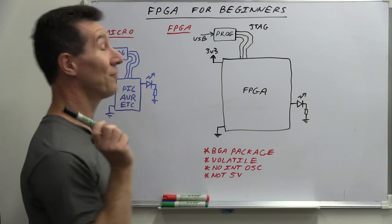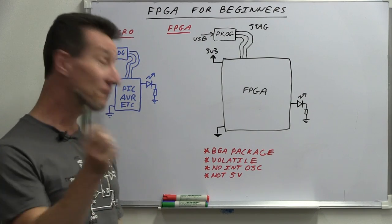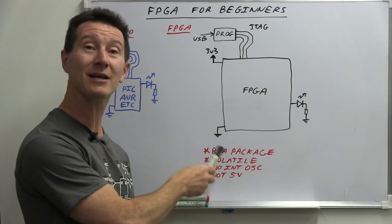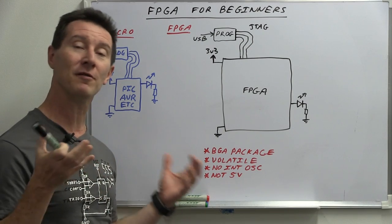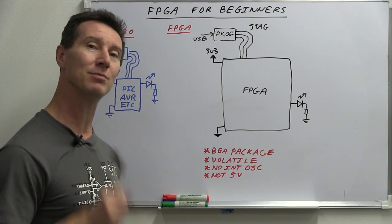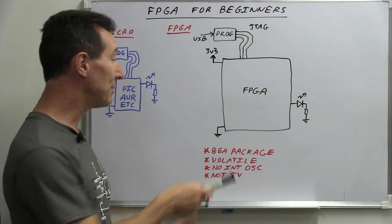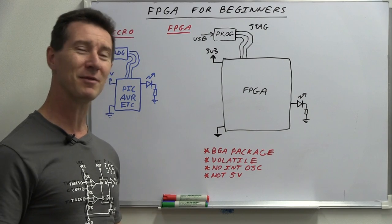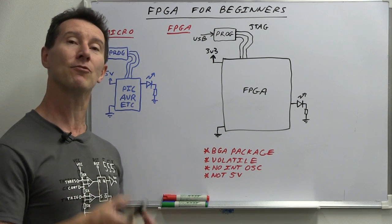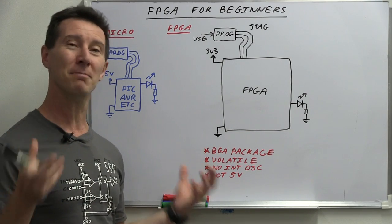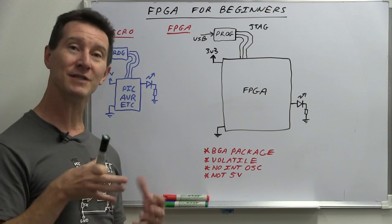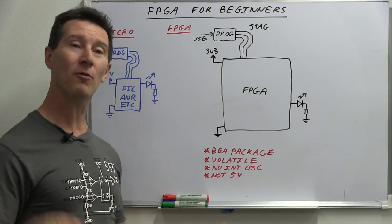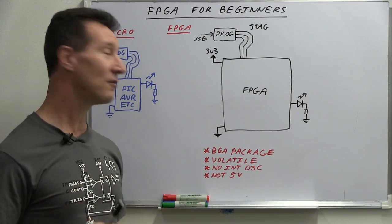Why? Because of quite a few things which we're going to take a look at. First of all, they usually come in pain in the ass BGA packages, not a simple friendly dip package which you can just plug into your breadboard. Maybe some of the low-end ones might come in a quad flat pack, but it might be a hundred pins or something like that. Real pain in the ass. So right off the bat there, you're going to have to mount this thing on some sort of adapter board at a bare minimum to get the thing in a usable format that you can connect all your stuff up to.